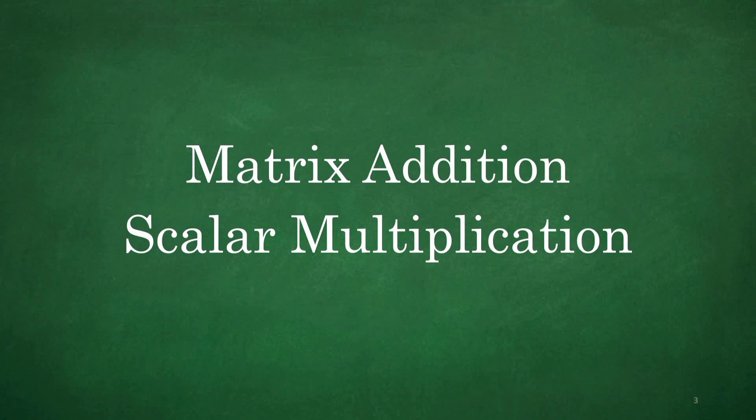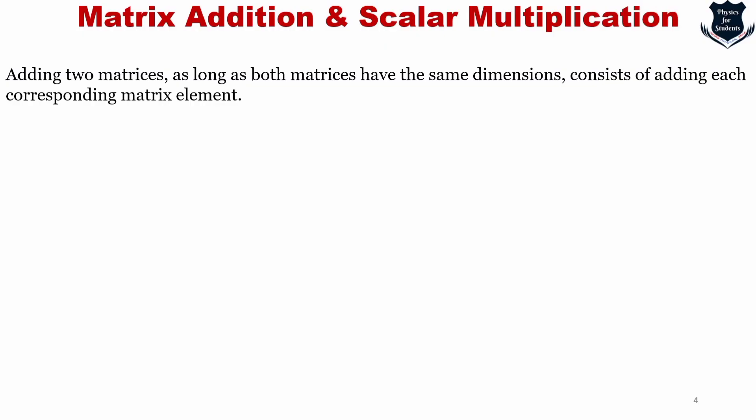The first topic is matrix addition and scalar multiplication. Similar to vector addition, adding two matrices — as long as both matrices have the same dimensions — consists of adding each corresponding matrix element. We can see that adding matrices as long as both have the same dimension consists of adding corresponding elements with each other. Similarly, scalar multiplication follows a comparable rule.